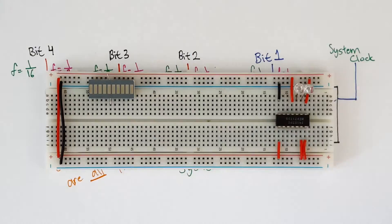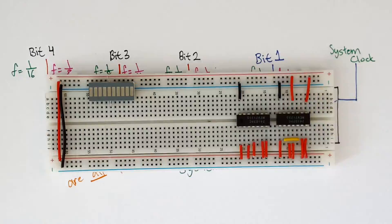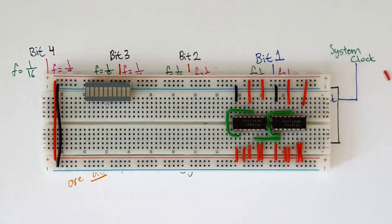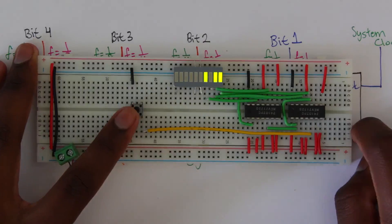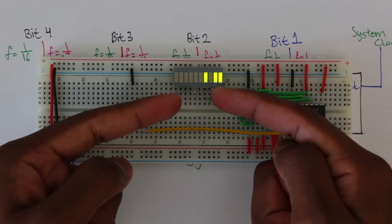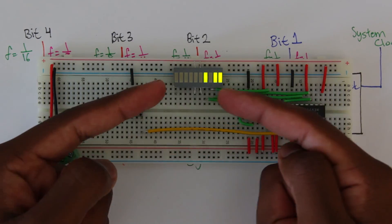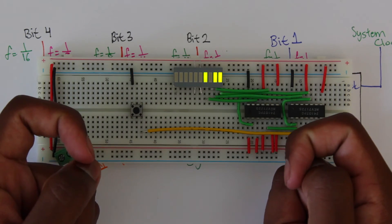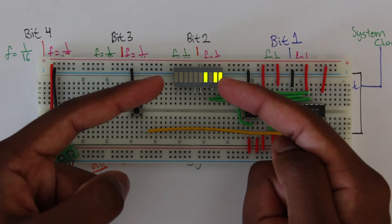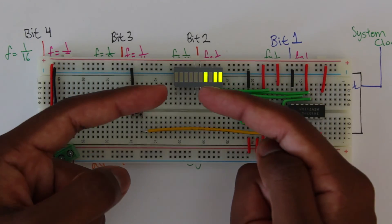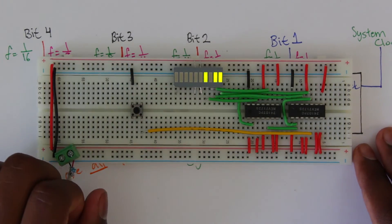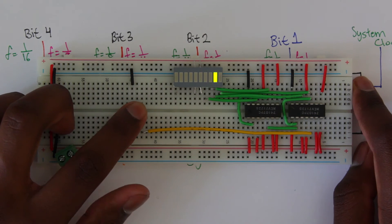Building the circuit took about an hour. I'm using a push button switch to mimic the clock pulse. Inside the switch, two plates come into contact when pressed to complete the circuit, but sometimes they retouch accidentally, creating two clock pulses when there should only be one — just something to be aware of.